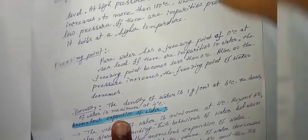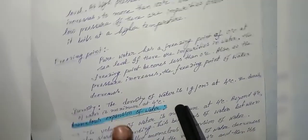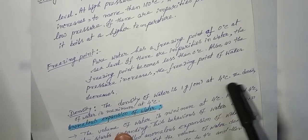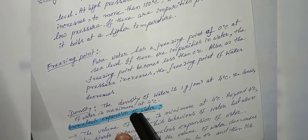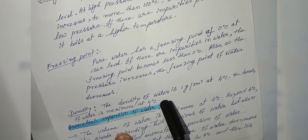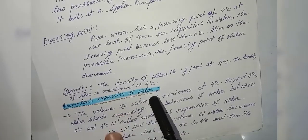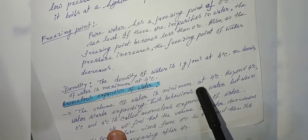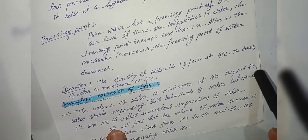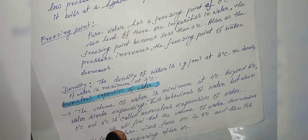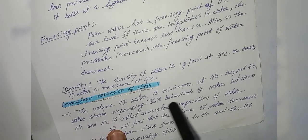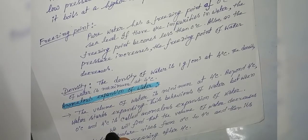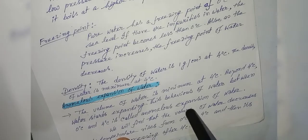Density: The density of water is 1 gram per cc at 4 degrees centigrade. The density of water is maximum at 4 degrees centigrade. Anomalous expansion of water: The volume of water is minimum at 4 degrees centigrade; beyond 4 degrees centigrade, water starts expanding. This behavior of water between 0 degrees centigrade and 4 degrees centigrade is called anomalous expansion of water.